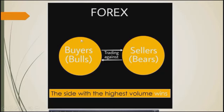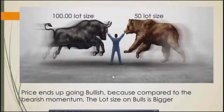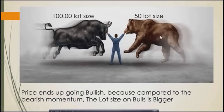Here's an illustration: buyers on one side are the bulls, and sellers on the other side are the bears. When they trade, they are actually trading against each other. When you're buying you're going against the sellers, and when you're selling you're going against the buyers. The side with the highest volume wins. For example, Mr. A buys USD/CAD with a 100 lot size and Mr. B sells USD/CAD with a 50 lot size.